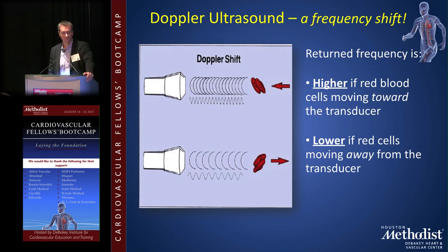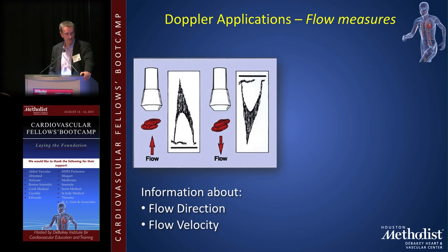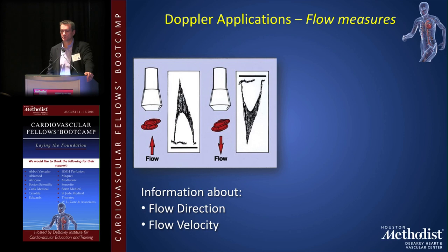Some Doppler applications: you get information about flow direction and flow velocity. Red blood cells hitting the probe are displayed with a velocity-time map — time across the bottom, velocity of flow on the axis. This is pulse wave Doppler. A deflection towards the probe means blood cells are moving towards the probe; inverted means flow is moving away. You have to understand where the probe is in relation to the structures you're imaging to determine whether flow is normal or abnormal. That's why you all should be scanning.